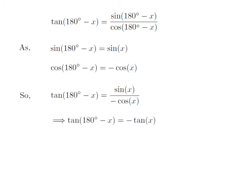As sine of x divided by cosine of x is equal to tangent of x, so tangent of 180 degrees minus x is equal to minus tangent of x.